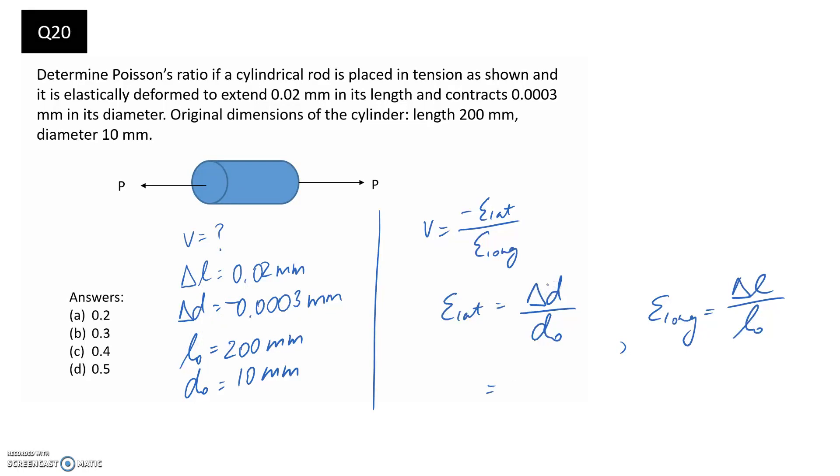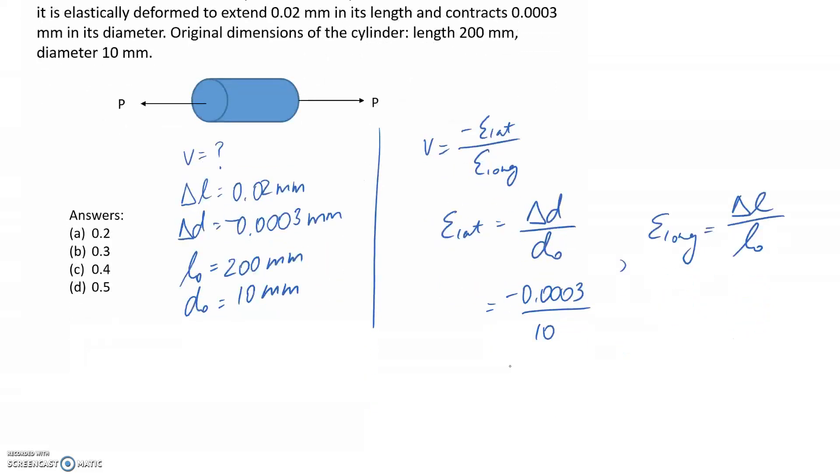So the change in diameter, this one here, and the original is 10. We can see that everything's in millimeters, so that means they're going to cancel, and it's going to leave strain being unitless, which is what we want. And this works out to negative 3 by 10 to the negative 5 for the strain in the lateral direction.